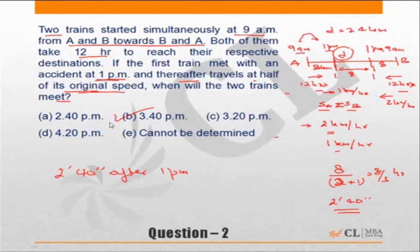Actually, you could have even started by saying if there had been no accident, the trains would have met at 3 p.m. Because of the accident, the trains will meet after 3 p.m., and the moment you say that, choice A becomes incorrect, choice E becomes incorrect, and you have three choices. You could even check the choices to see which one is correct.